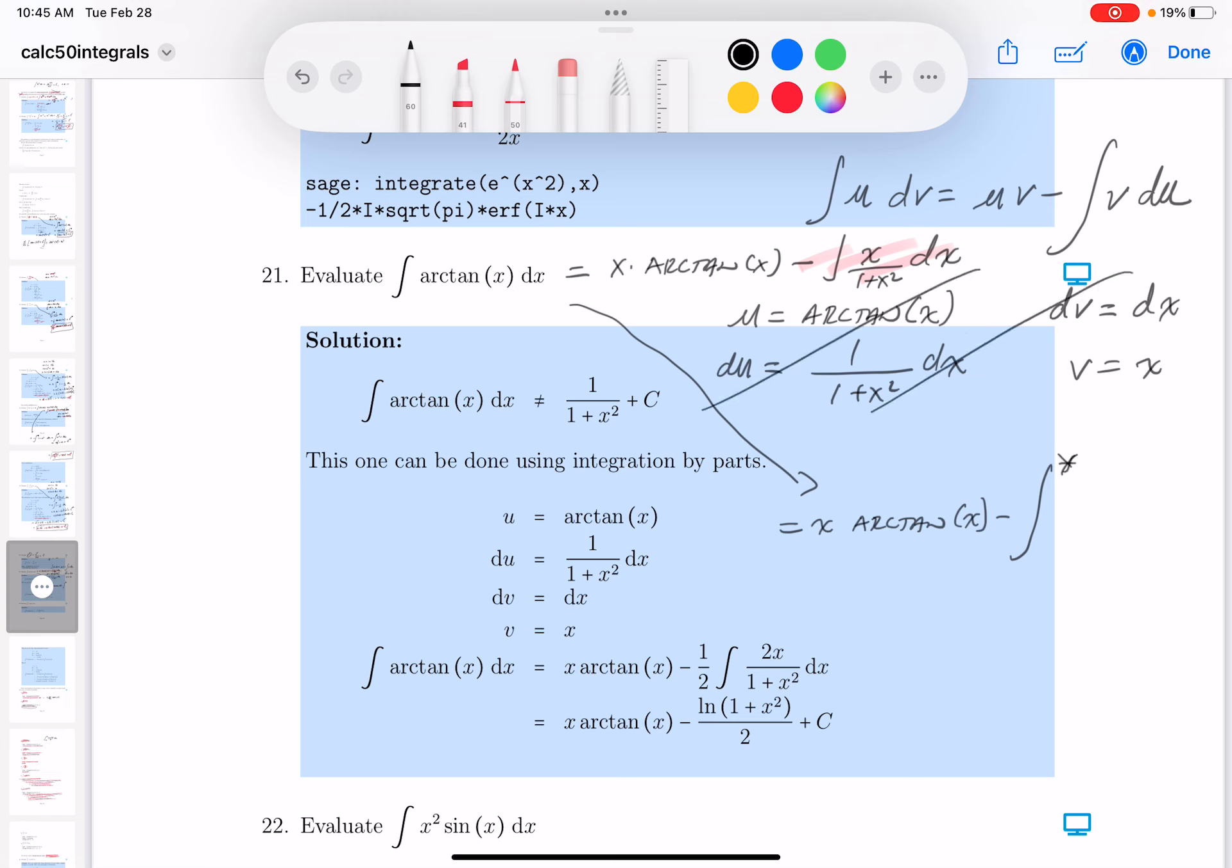I'm going to cross this out, I'm done with this. I'm going to go on to u now. I'm going to say u is equal to 1 plus x squared, so du would be 2x dx.